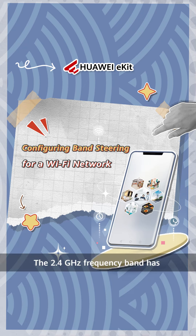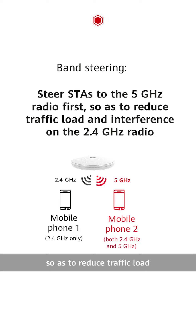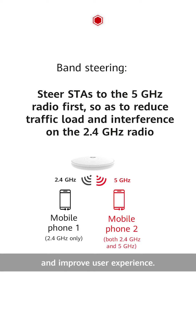The 2.4 GHz frequency band has fewer channels. The band steering function enables an AP to steer stations to the 5 GHz radio first, so as to reduce traffic load and interference on the 2.4 GHz radio and improve user experience.